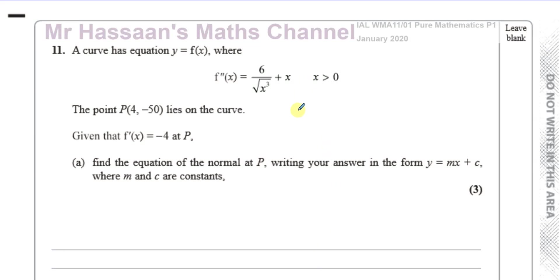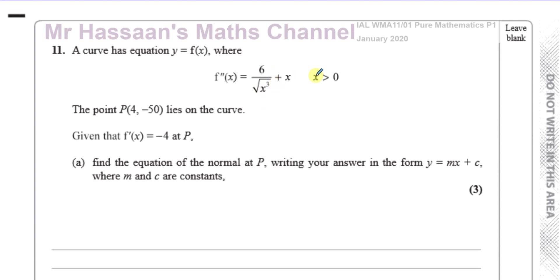Welcome back. I'm on question number 11 from the January 2020 International A-Level Pure Mathematics P1 paper. This is Mr. Hassan's math channel. In this question you have a curve with equation y equals f of x, where f double dash x equals 6 over x cubed plus x, and x is greater than 0.